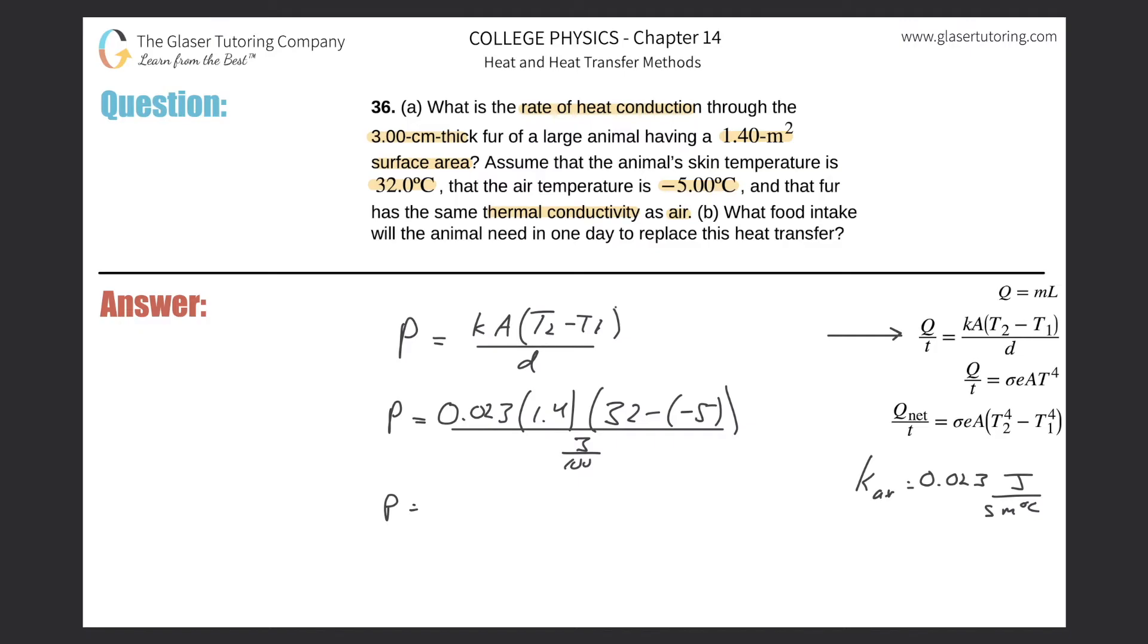Alright, this problem's fairly easy. This one's just a plug-in, plug-and-play. 0.023 times 1.4 times 32 plus 5 essentially, and then divided by 3 over 100, and 39.7. 39.7, and this is in watts, or joules per second. Remember they are equivalent, it's energy per time, that's what power is, and Q per T is the same thing.